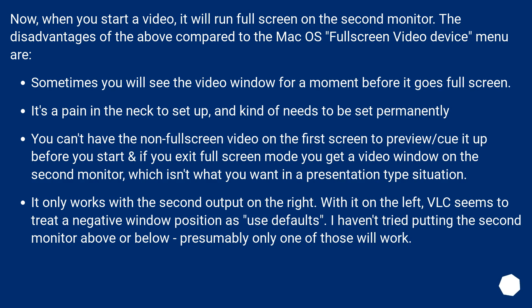You can't have the non-full-screen video on the first screen to preview or queue it up. If you exit full screen mode, you get a video window on the second monitor, which isn't what you want in a presentation situation. It only works with the second output on the right — with it on the left, VLC seems to treat a negative window position as use defaults. Putting the monitor above or below hasn't been tested.